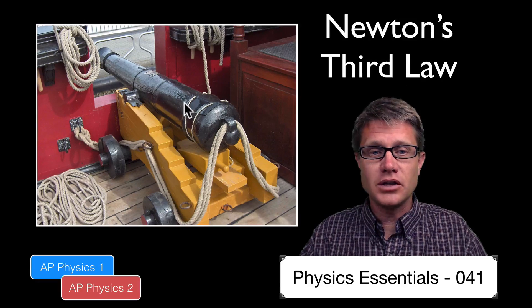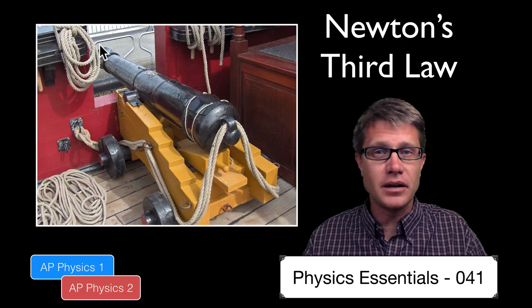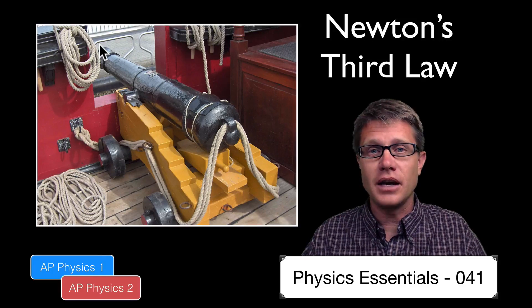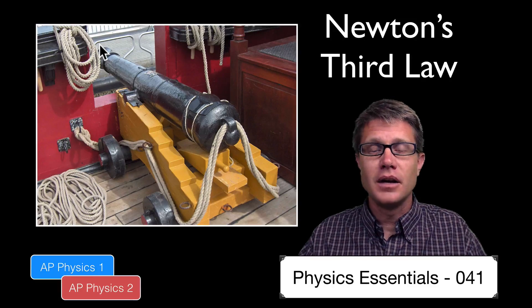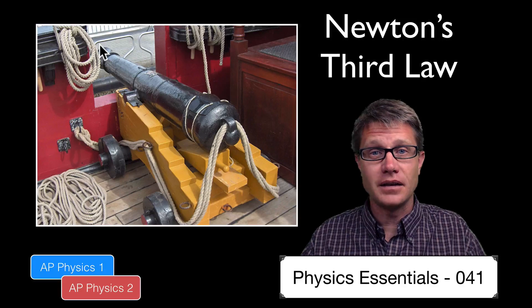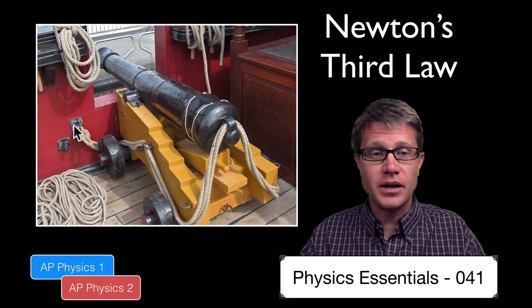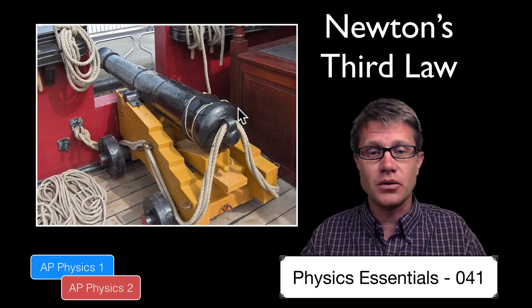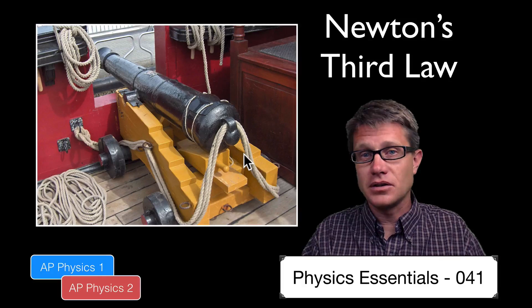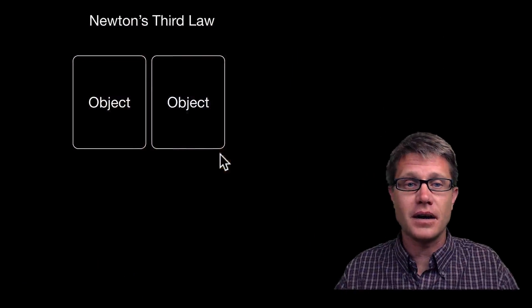When you launch a cannonball out this side of the cannon, you are applying a force to that cannonball. But the cannonball is exerting an opposite and equal force on the cannon, and that is going to cause recoil. That is why these giant ropes are on this cannon, so it does not go shooting off across the deck.